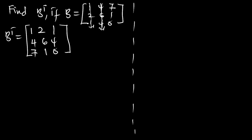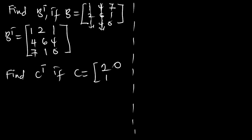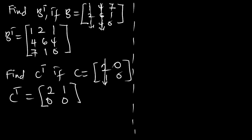Let's look at the last example. Find C transpose if C is equal to [2, 0; 1, 0]. Therefore our transpose matrix is going to be [2, 1; 0, 0], and we've transposed this matrix.